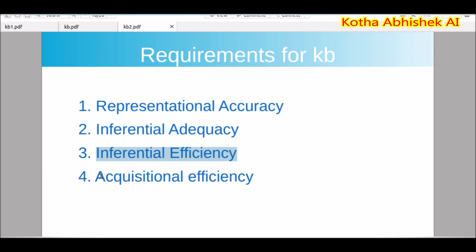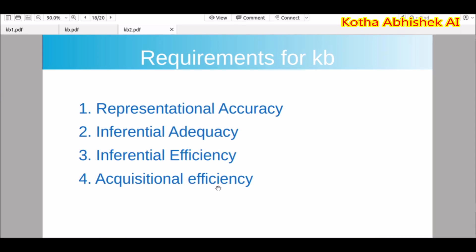And the last one is acquisitional efficiency. What is acquisitional efficiency? It means the ability to acquire new knowledge easily using automatic methods. Whatever we have added, it should be able to derive automatically. That is called acquisitional efficiency. These are all the requirements for KB. We have seen the knowledge cycle and all approaches. We will see more topics like knowledge representation techniques and levels in later videos. Thank you for watching.